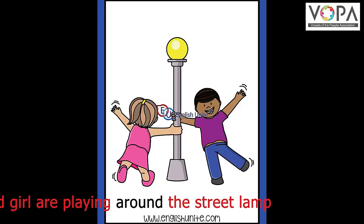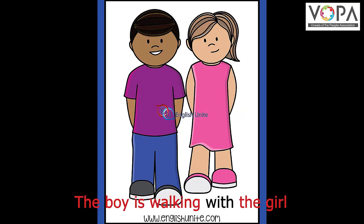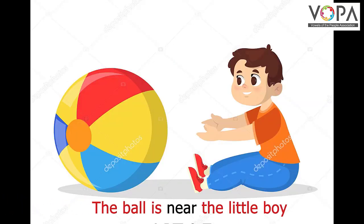The boy and girl are playing around a street lamp. The boy is walking with the girl. The ball is near the little boy.